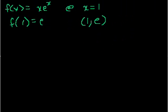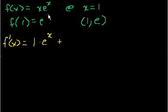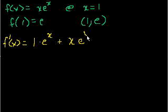The slope of the tangent line is just the derivative at x = 1. f'(x) — this looks like a job for the product rule, since we have x times e^x. The product rule gives us: derivative of x times e^x, plus x times derivative of e^x. The derivative of x is 1, and the derivative of e^x is e^x — which is what's so amazing about e^x: its slope at any point equals the value of the function.